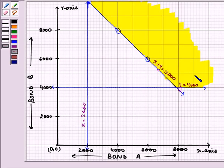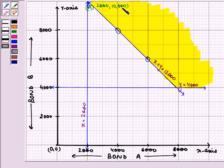Now, we need to find out the value of Z at the corner points. Let this point be A. The coordinates of this point are coming out to be 2,000, 10,000. If we extend this Y line, this is point B whose coordinates are 8,000, 4,000.